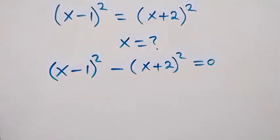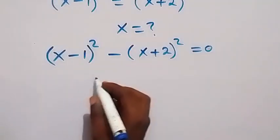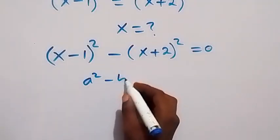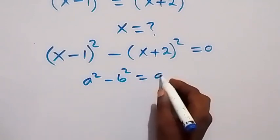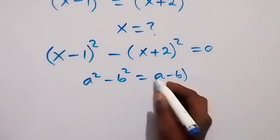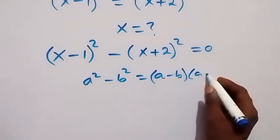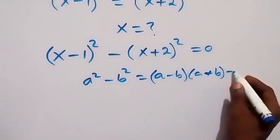Here we have it in the form of difference of two squares. This one we have a² minus b², so this is the same thing as (a-b) times (a+b), and here it's equal to 0.